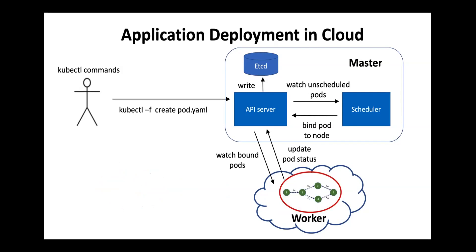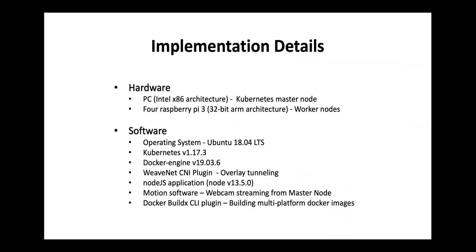Due to the distributed nature, heterogeneity, and limited resources of fog nodes, the fog computing environment has different orchestration requirements, and the analysis of performance and usability of Kubernetes in the fog computing environment is an interesting and relatively new area of research. In this paper, we demonstrate the industrial feasibility and practicality of deploying and managing containerized IoT applications on real devices. The design is implemented on a network of four Raspberry Pis acting as fog devices and one PC that serves as a master node. We used Ubuntu as the operating system and installed Kubernetes and Docker engine on each device.